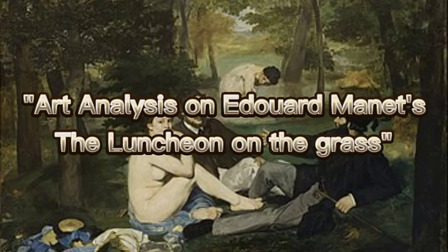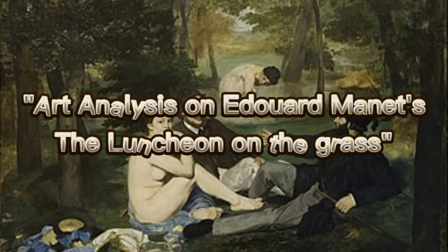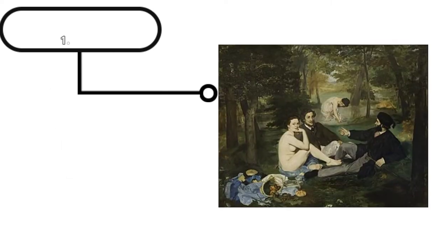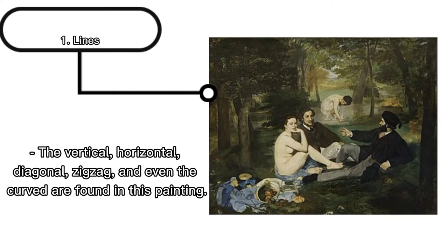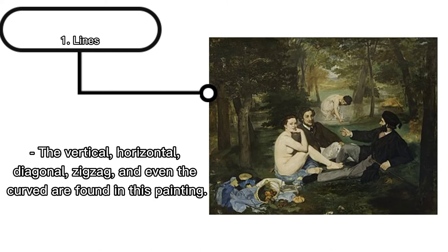The art analysis on Edouard Manet's Luncheon on the Grass. If we look at the painting, what elements and principles are found in this artwork? Number 1 is the lines. The lines are mixed in this painting — the vertical, horizontal, diagonal, zigzag, and even the curve are found in this painting.